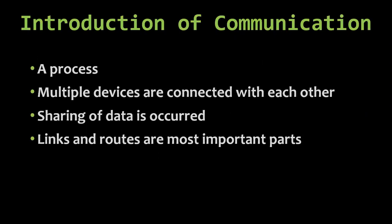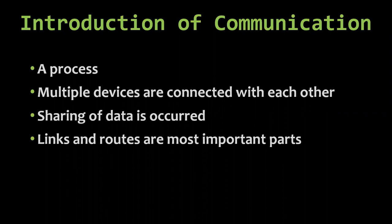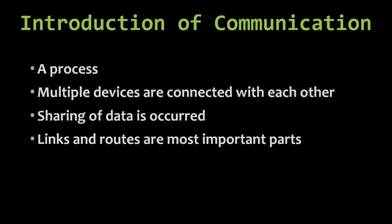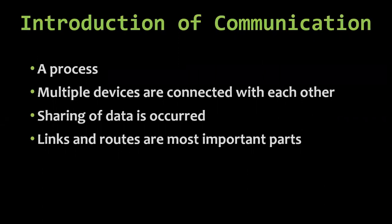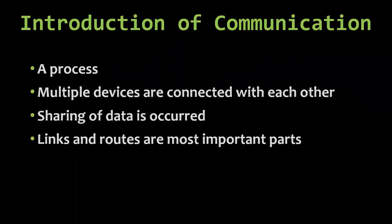Links and routes are the most important parts. Links mean the devices must be connected with each other carefully and properly. Routes are the connections — the wires, roads, passages, and paths to transfer data from one device to another. So basically, communication is a process in which two devices must be connected properly, and this connection enables data to transmit and travel from one device to another device.